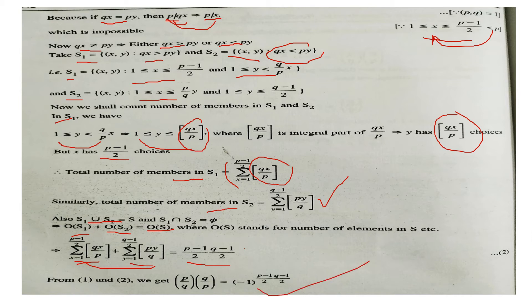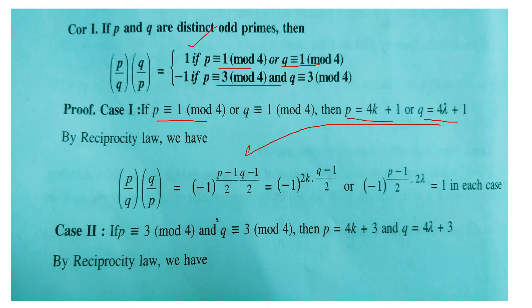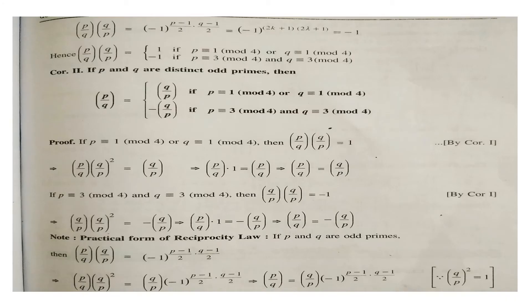Now for corollaries of the reciprocity law. If p ≡ 1 (mod 4) and q ≡ 1 (mod 4), write p = 4k+1 and q = 4m+1; substituting shows the exponent (p−1)/2 · (q−1)/2 is even, so (p/q)·(q/p) = 1. If p ≡ 3 (mod 4) and q ≡ 3 (mod 4), substituting gives an odd exponent, so the product equals −1.